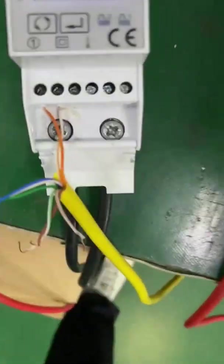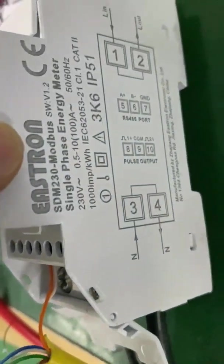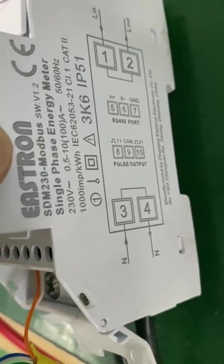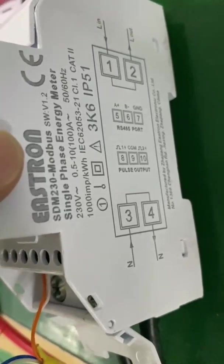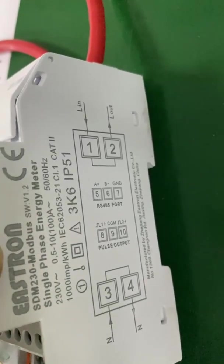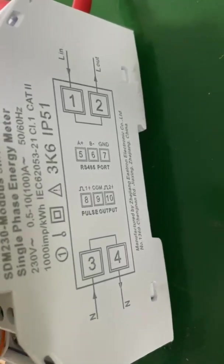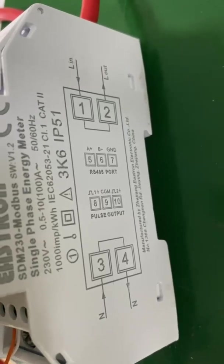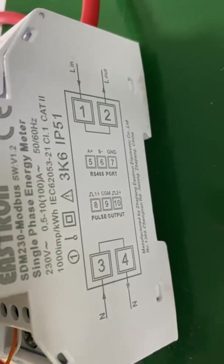And here is the diagram. It tells you terminal 3, terminal 4 is for the neutral line. And terminal 1 and terminal 2 is for the live line. And for the RS-485 port is terminal 5 and terminal 6.